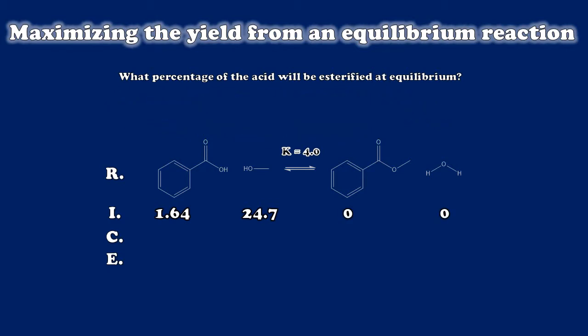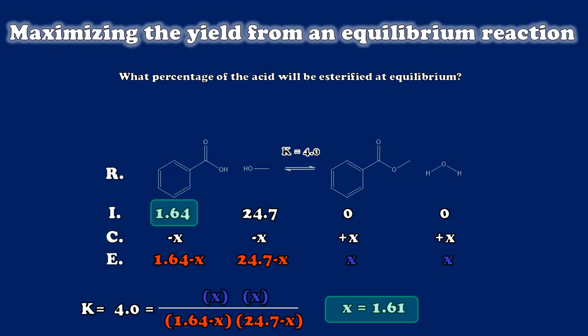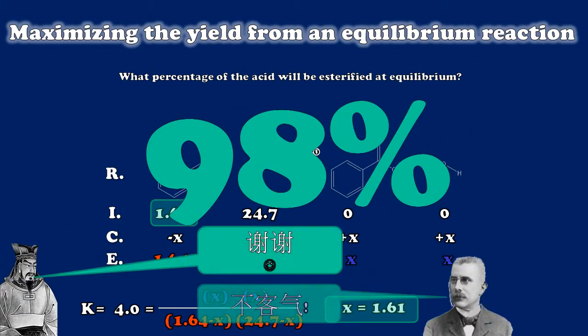We start with no product and the system moves to reach equilibrium. Our equilibrium concentrations are calculated based on the stoichiometry, which in our case is all 1:1:1:1 — very simple. When we run these numbers, we discover that the result is 1.61 molar product. That is almost a quantitative conversion — it's 98% conversion, to which Sun Tzu says thank you. And of course Le Chatelier says thank you and you're welcome.